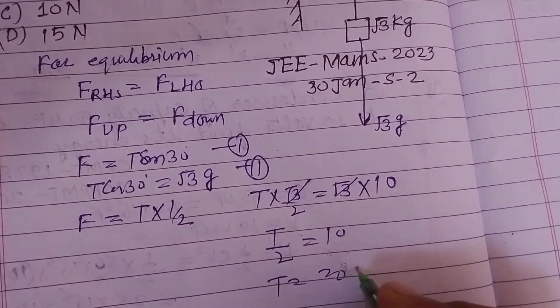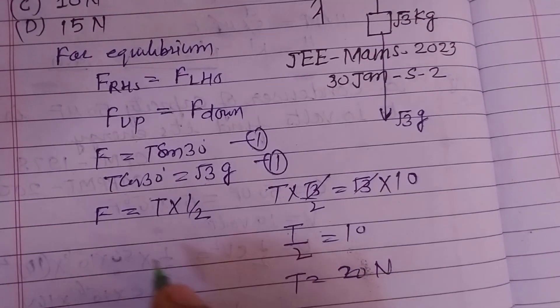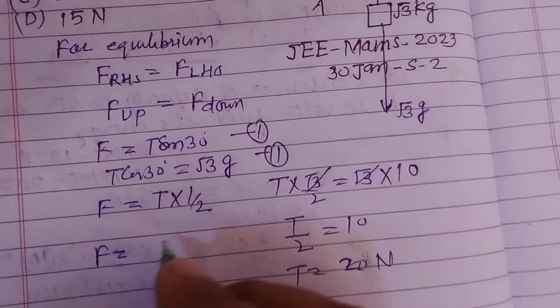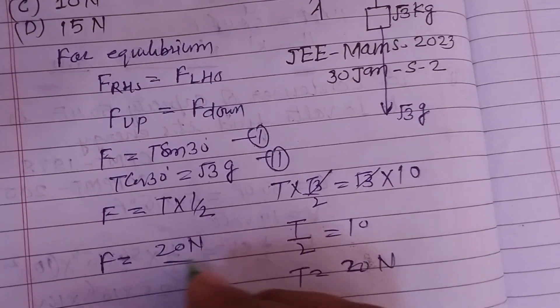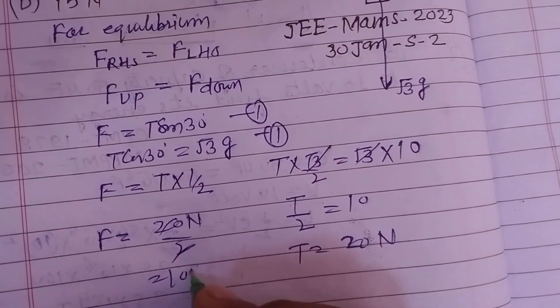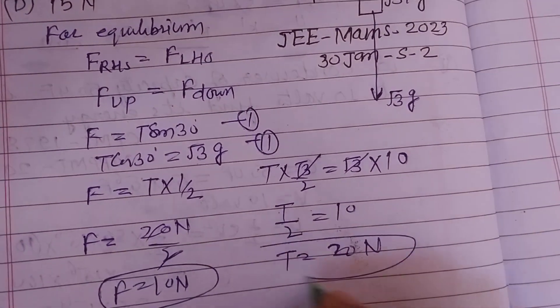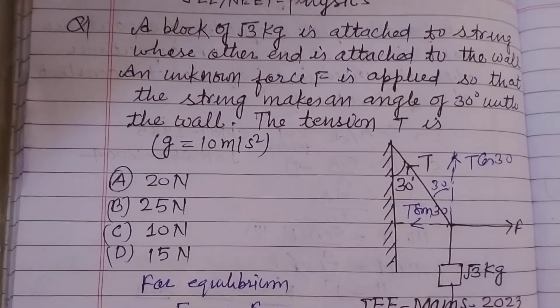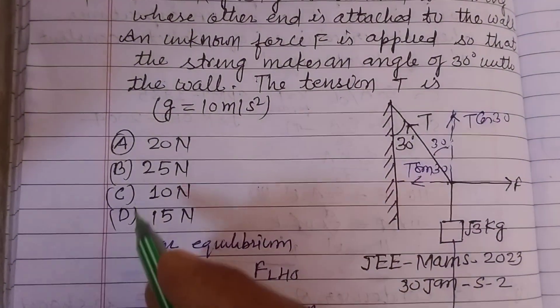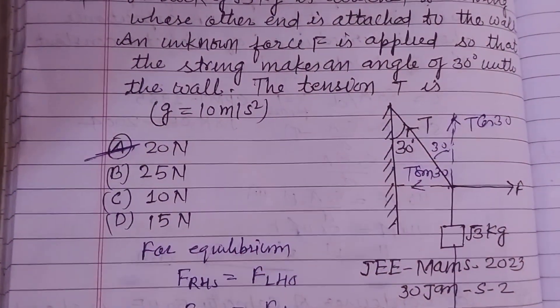Therefore T equals 20 Newton. Then F equals 20 Newton by 2, so this is 10 Newton. F equals 10 Newton and T is 20 Newton. The question is asking the tension, so tension is 20 Newton which is given in option A.